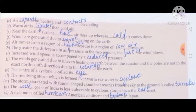M) the storm associated with funnel shaped cloud that reaches from the sky to the ground is called tornado. N) the west coast of India is less vulnerable to cyclonic storms than the east coast.